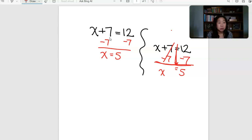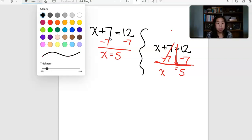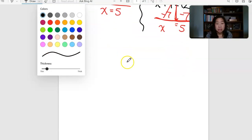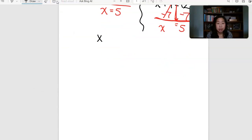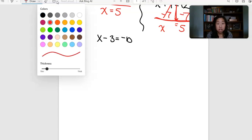7 minus 7 is 0 so what I'm left with is x equals 12 minus 7 is 5. We can do another example: let's do x minus 3 equals negative 10.